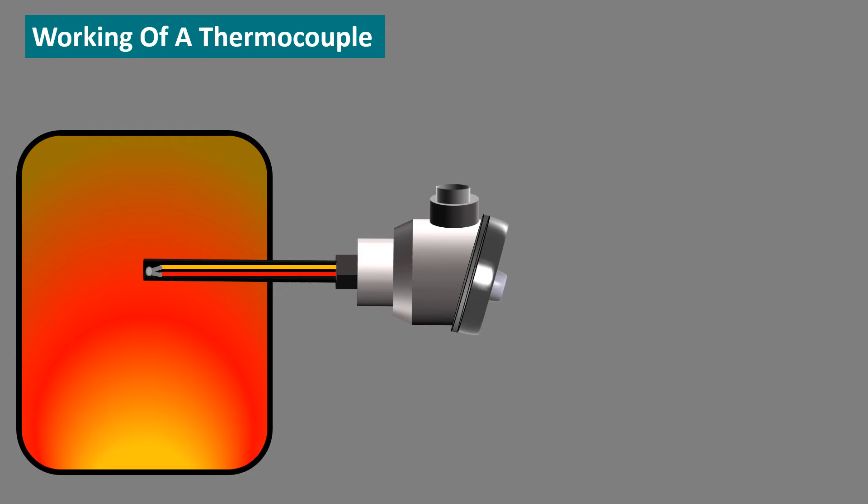Working of a thermocouple. The junction is placed on the surface where we want to measure the temperature. This junction is known as the hot junction and the other end of the two wires are kept at room temperature. This junction is known as the cold junction or reference junction.